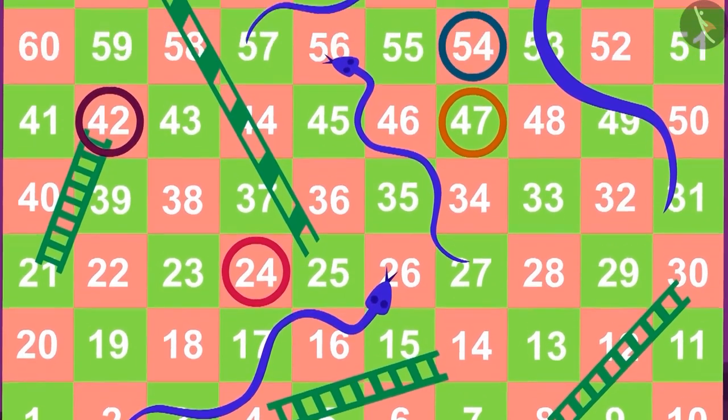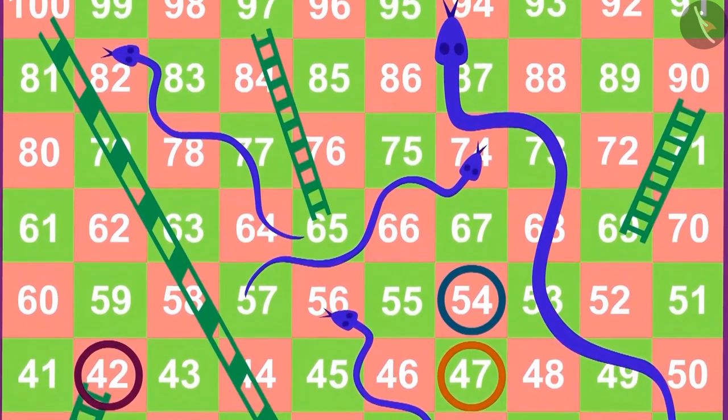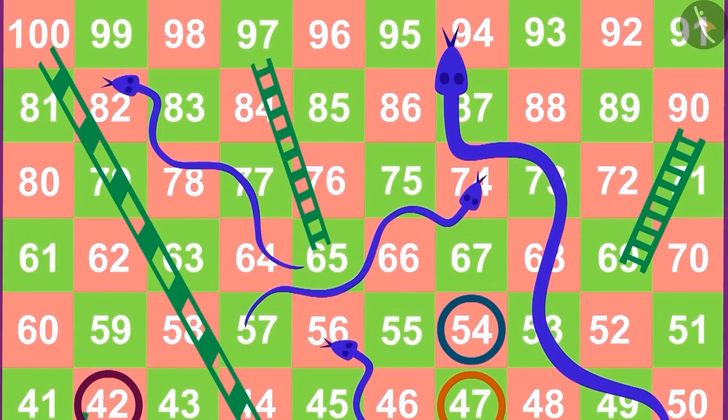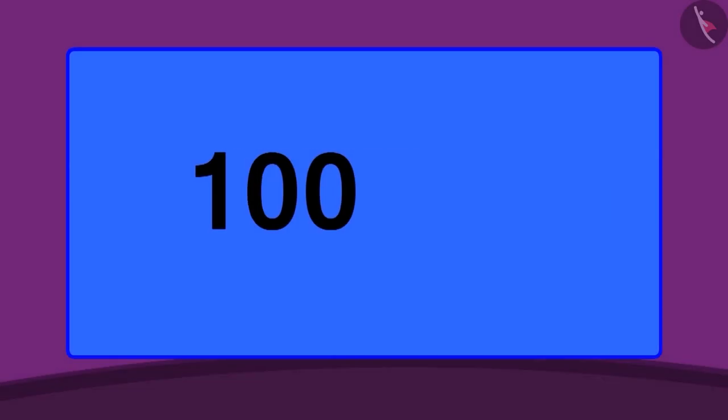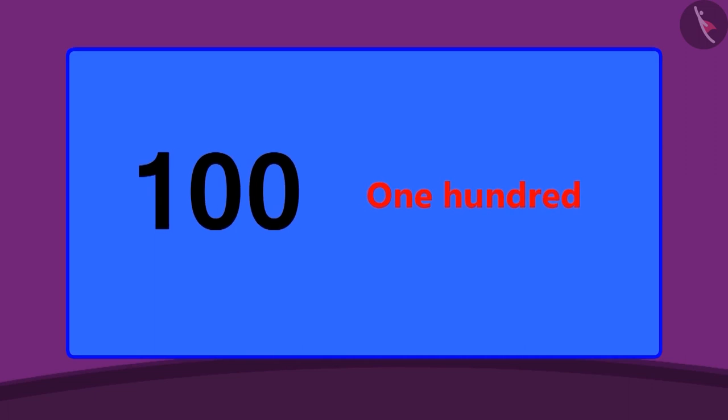So far we have learnt about two digit numbers. In this lesson we will learn about three digit numbers. The count of three digit numbers starts from 100. Do you know that 100 runs in the game of cricket is also called a century?